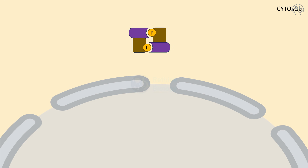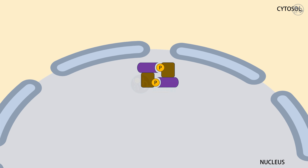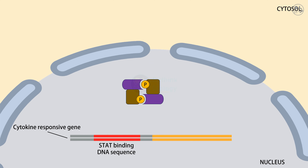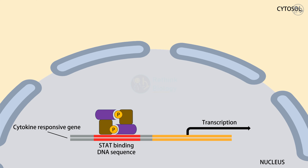The STAT pairs then move to the nucleus, where they bind to specific DNA sequences and turn on or off the expression of certain genes. This way, cytokines can control the behavior of the cell through the JAK-STAT signaling pathway.